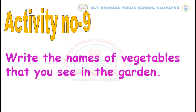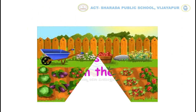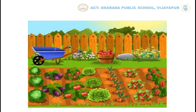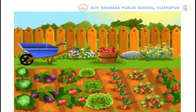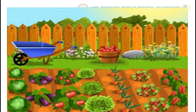Write the names of vegetables that you see in the garden. Observe the picture carefully. You can see many different vegetables. For example, cabbage, brinjal, tomato and capsicum, etc.